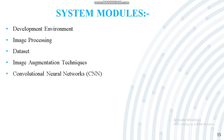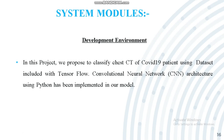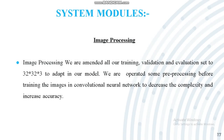The system has several components: development environment, image processing, data collection, image augmentation, and convolutional neural networks. We propose to classify chest CT images of COVID-19 patients using a dataset with TensorFlow, and the CNN architecture is implemented in Python. For image processing, the training, validation, and evaluation sets are resized to 32x32x3 to adapt to our model. We apply some pre-processing before training the images in the CNN to decrease complexity and increase accuracy.